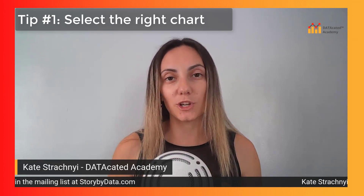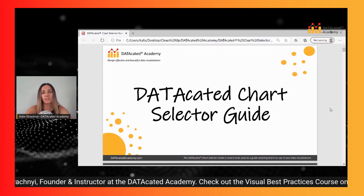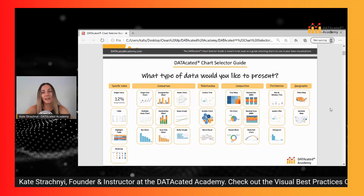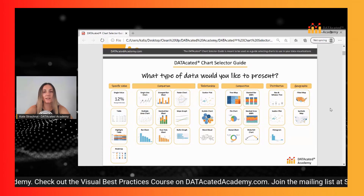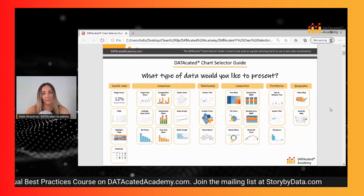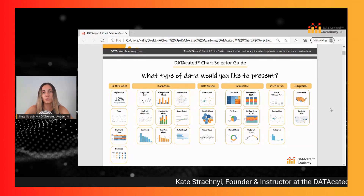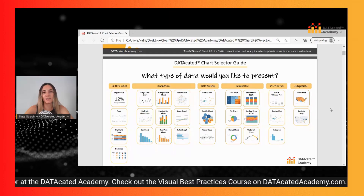I've got something that I think is really helpful here, called the Dedicated Chart Selector Guide. This is the Dedicated Chart Selector Guide that I actually use in the Visual Best Practices course. It's meant to be used as a guide for selecting charts, and while it's not a comprehensive list, it's a great place to start — you can begin with whether you want to show a specific value, comparison, relationships, composition, distribution, or geographic type of data, and then select your chart.